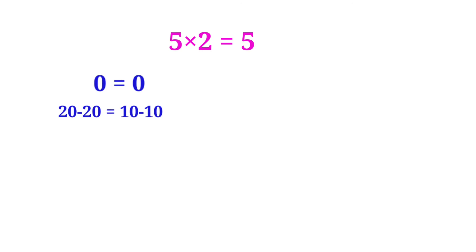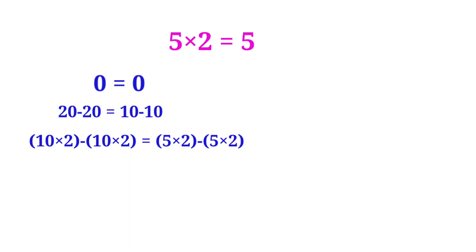So 20 minus 20 is equal to 10 minus 10. Now we can write 20 as 10 into 2, and the other 20 also as 10 into 2. And we can write 10 as 5 into 2, and the other 10 also as 5 into 2. So 10 into 2 minus 10 into 2 is equal to 5 into 2 minus 5 into 2.